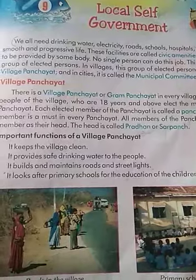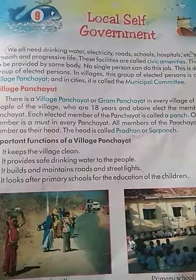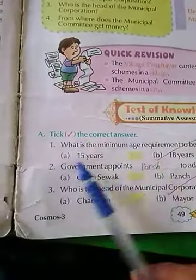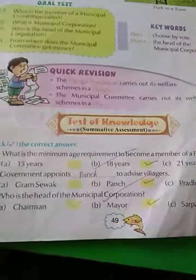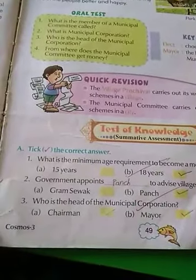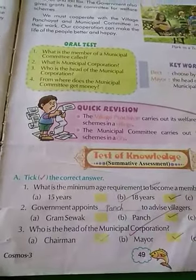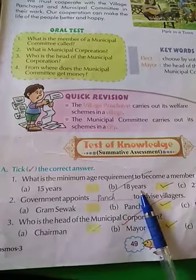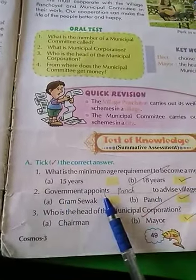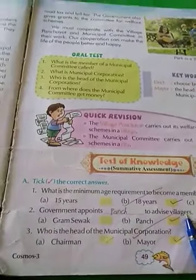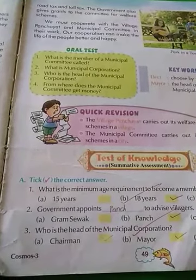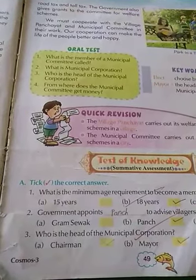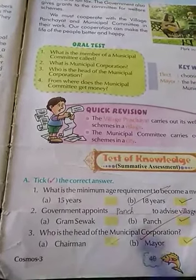In the previous video we covered this chapter, and now we will go through the question answers. First question: What is the minimum age requirement to become a member of panchayat? Panchayat के सदस्य बनने के लिए minimum कितनी age होना ज़रूरी है? The correct answer is 18 years. Second: the government appoints someone to advise villagers — गाँव के लोगों को advise देने के लिए government एक member को appoint करता है — वो होता है Panch.